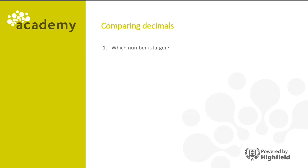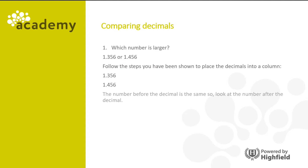Which number is larger: 1.356 or 1.456? Follow the steps we've been shown to place the decimals into a column. The number before the decimal is the same, so look at the number after the decimal. The 4 is larger than the 3, so the answer is 1.456.